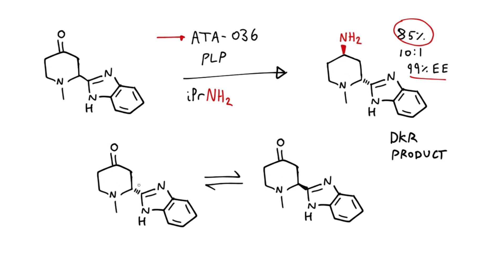And so when it reacts with the version with the benzimidazole down, that's removed from the equilibrium. And so just by the basis of Le Chatelier's principle, the wrong enantiomer will then carry on equilibrating to the correct enantiomer.